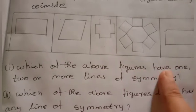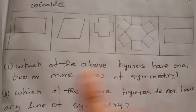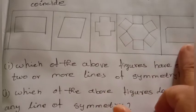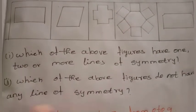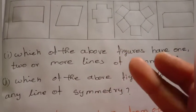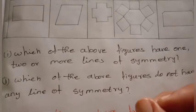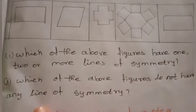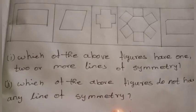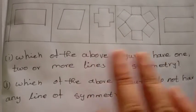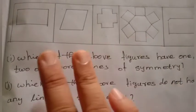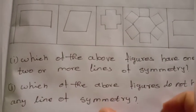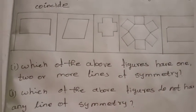Which of the above figures have one, two, or more lines of symmetry? In the figures, there are no lines of symmetry. Which of the above figures do not have any line of symmetry? In any figures there are no line of symmetry. That's why I am going to tell you about it.